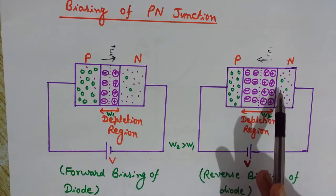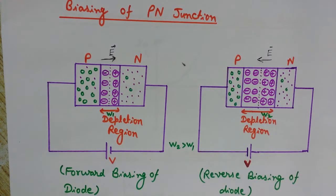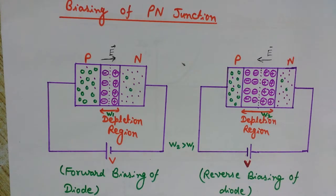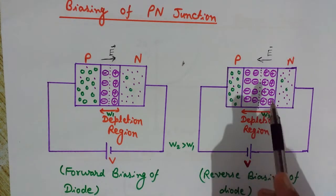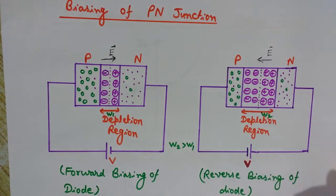When we keep increasing the reverse voltage, at a certain voltage the diode breaks down — this is known as the breakdown of the diode. The potential at which the diode breaks down is known as the breakdown potential. What voltage a diode will break down at depends on the amount of doping.